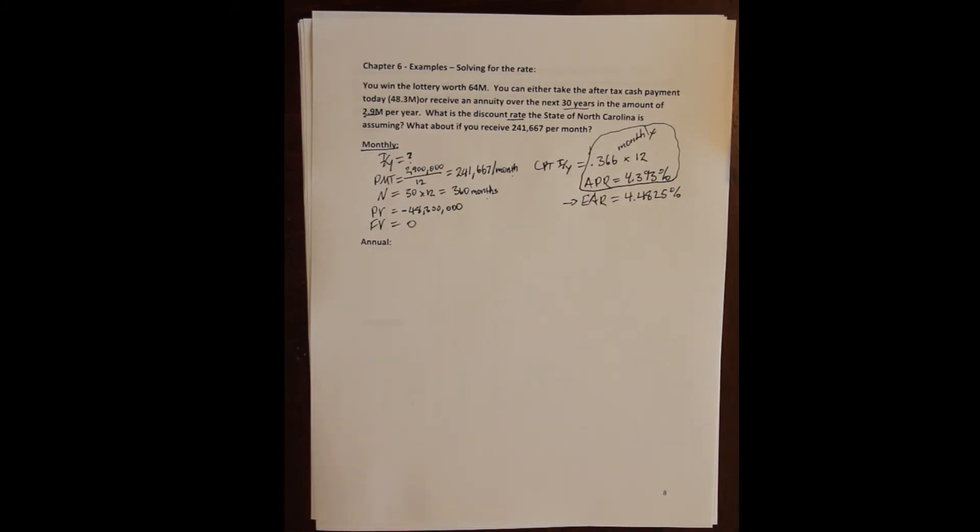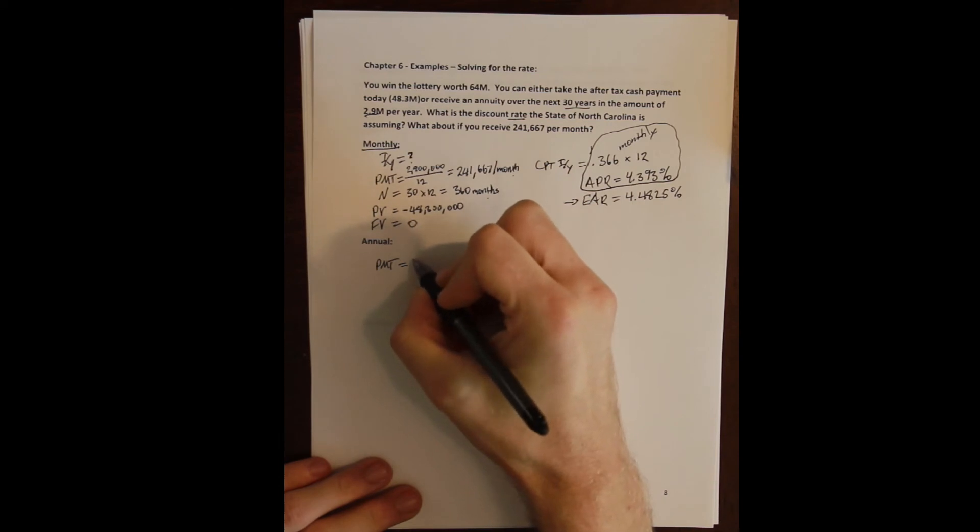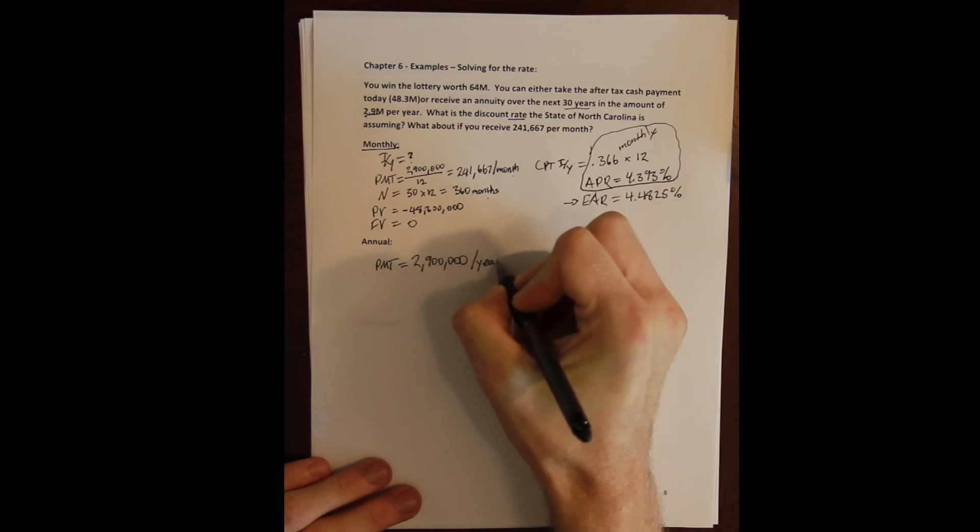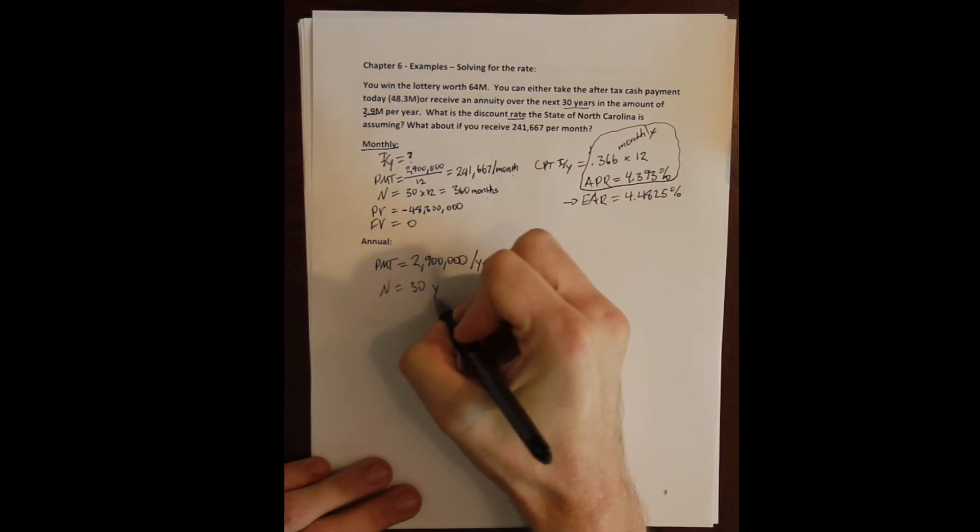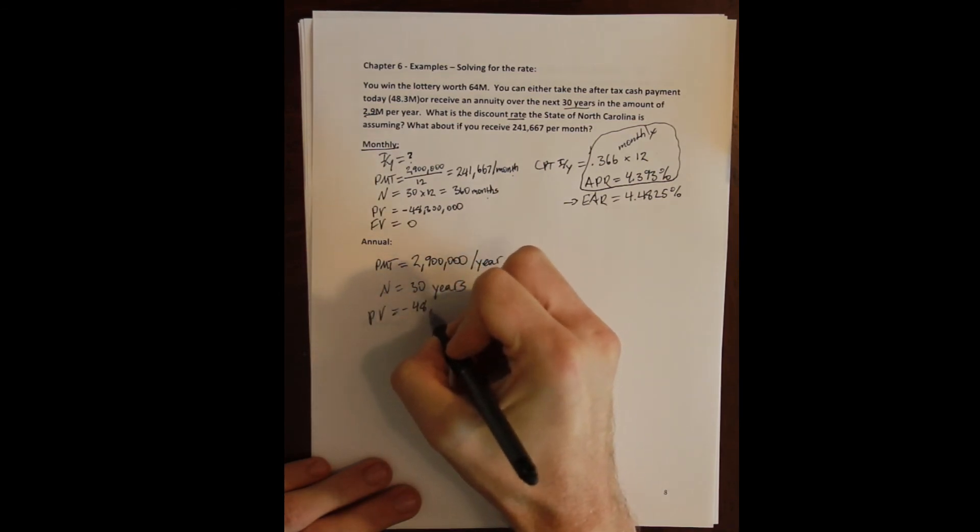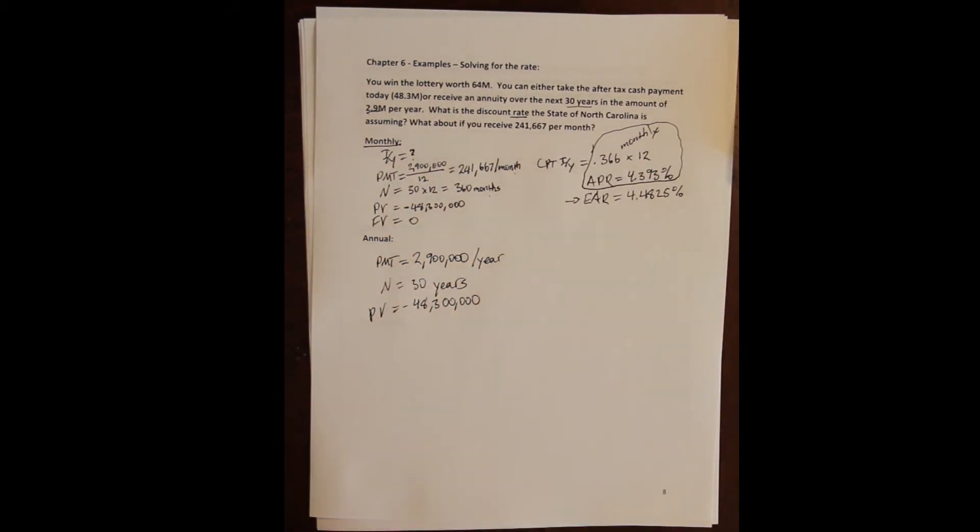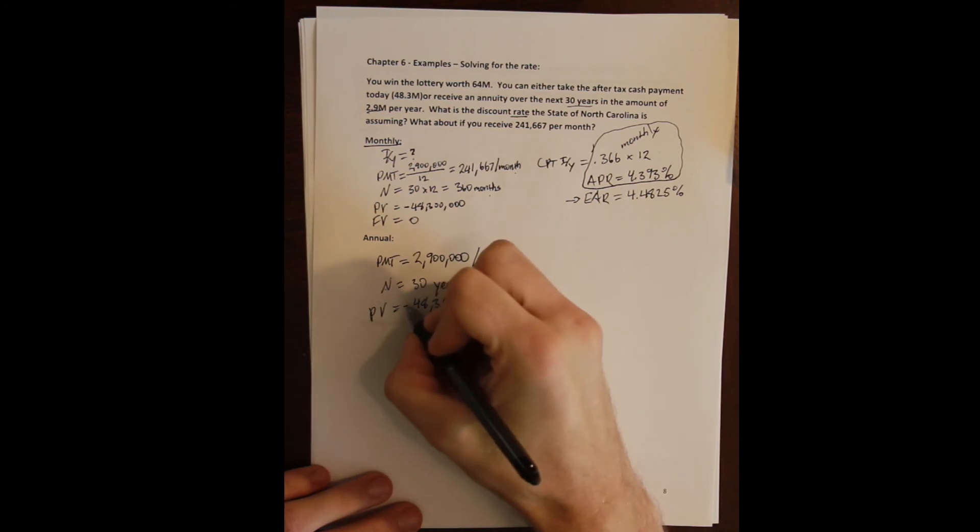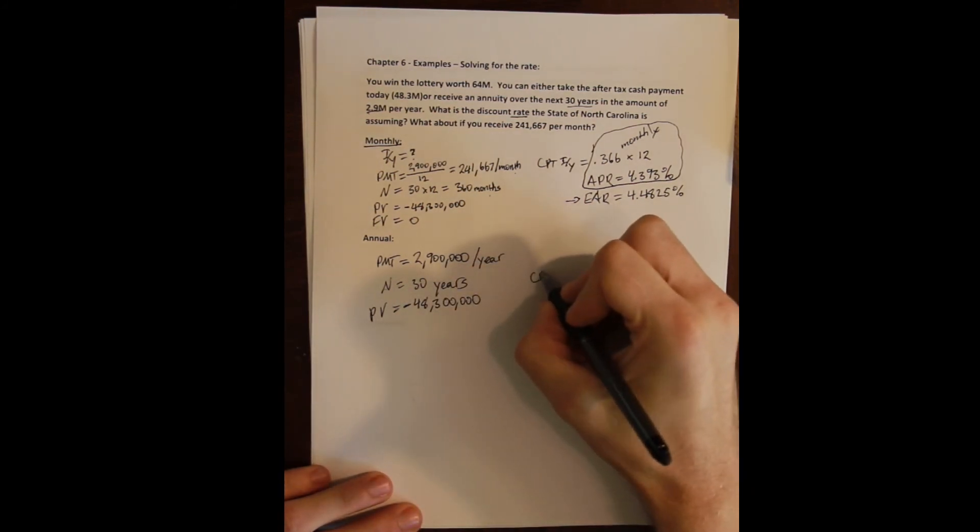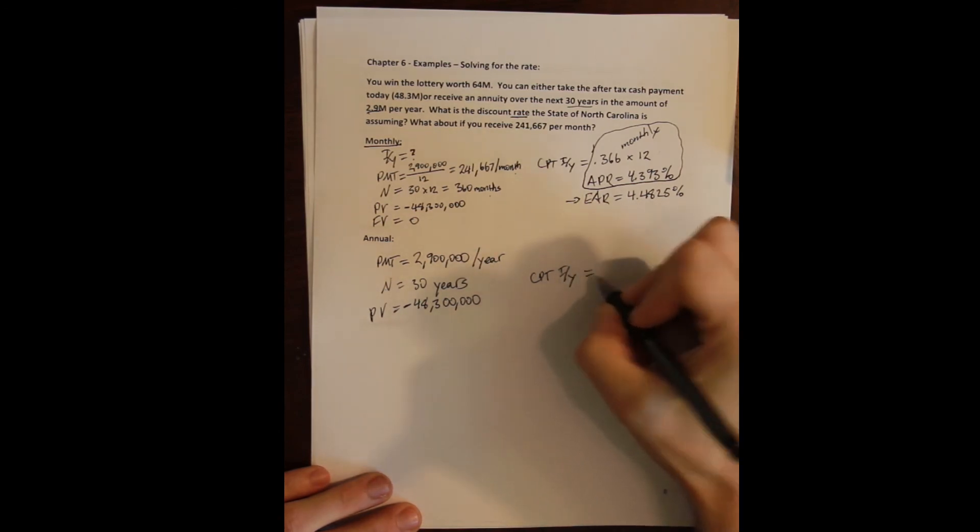Now if we just think about it in terms of annual compounding, everything gets a little easier because we're given everything in the annual period already. So our payment is $2.9 million per year, our N is already 30 years, our present value is the same—we are trading off $48.3 million in order to receive the annuity, and so that means it's a cash outflow. We are effectively paying that amount to get the annuity later on. We can compute our I/Y here and get 4.312%.